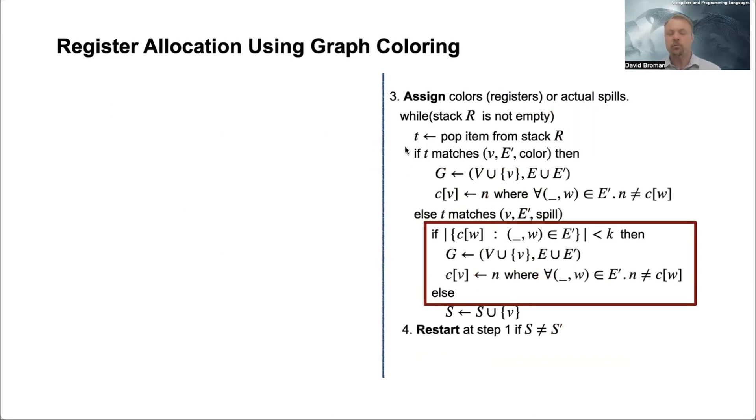If we get this and we are somewhere popping now from the stack, we do not match with the color, but instead we match it on this spill, we get into this part. And what is happening here is that we're trying to allocate - we're doing so-called optimistic coloring.